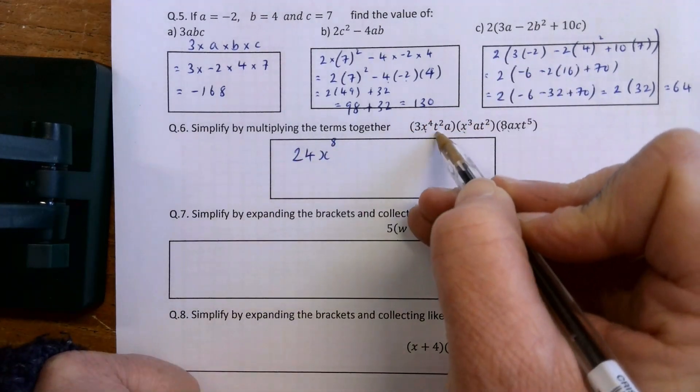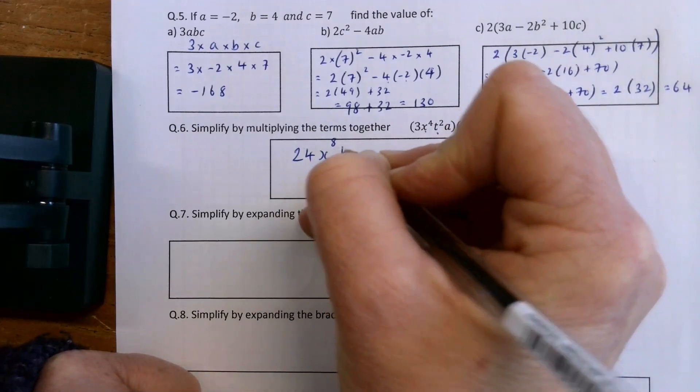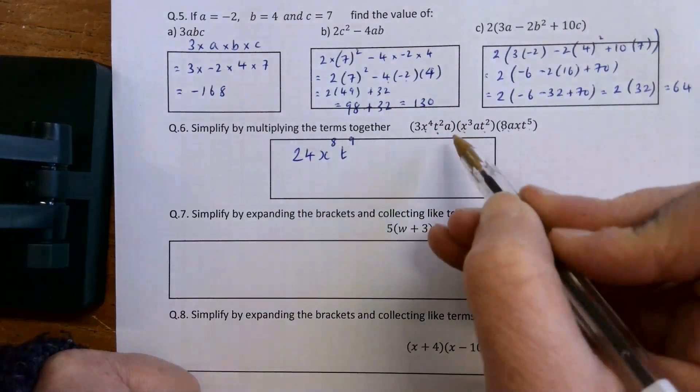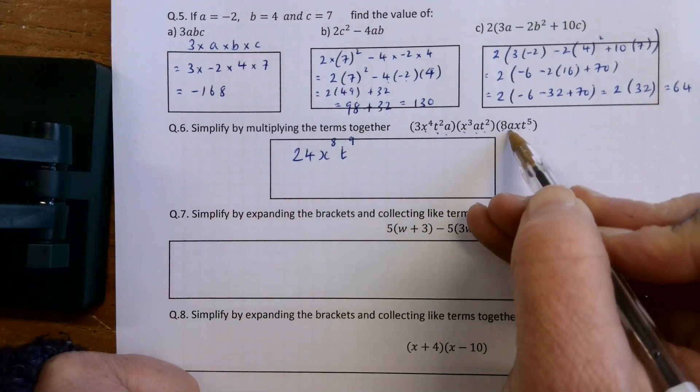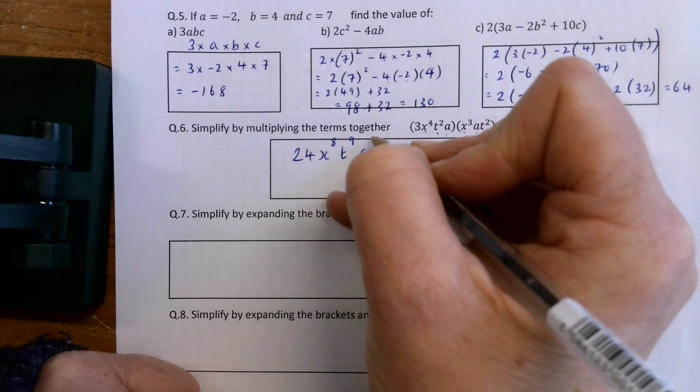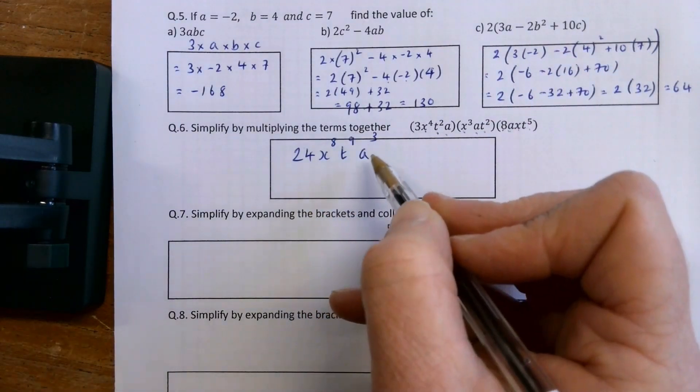t squared by t squared is t to the power of 4, by t to the power of 5 is t to the power of 9. And A by A is A squared by A is A cubed. So 28x to the power of 8, t to the power of 9, a cubed.